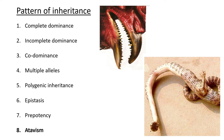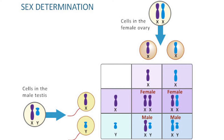Now we move on to sex determination. The best example is humans with X and Y chromosomes, though some animals also use X and Y, and sometimes scientists use letters like Z or W depending on the species. If you have an XX individual, that's female; if you have an XY individual, that's male. We don't call them X and Y chromosomes because of their shapes — X refers to the female chromosome and Y to the male. The Y chromosome is physically smaller than the X chromosome and has fewer genes and less DNA.